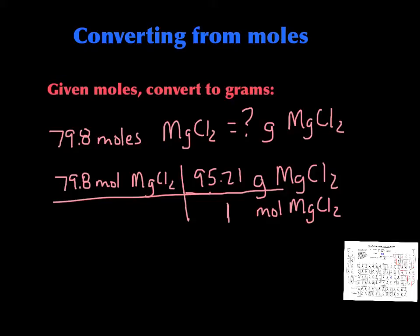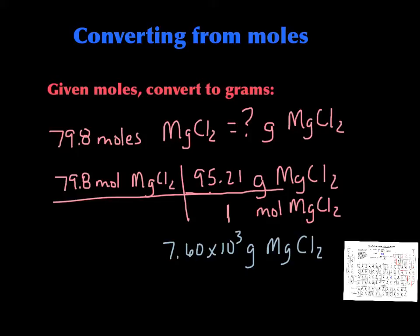If you're having trouble with the calculation of the molar mass, go to the last video — the mass to mole video — and I go through how to calculate those, so make sure that you know how to do this. Then you just calculate it out. When I calculated it, I got 7597.758. You do 79.8 times 95.21. I rounded that to three sig figs and put it in scientific notation for 7.60 times 10 to the third.